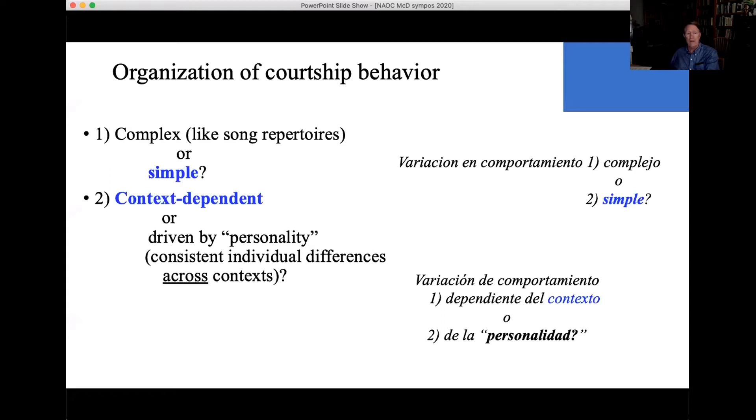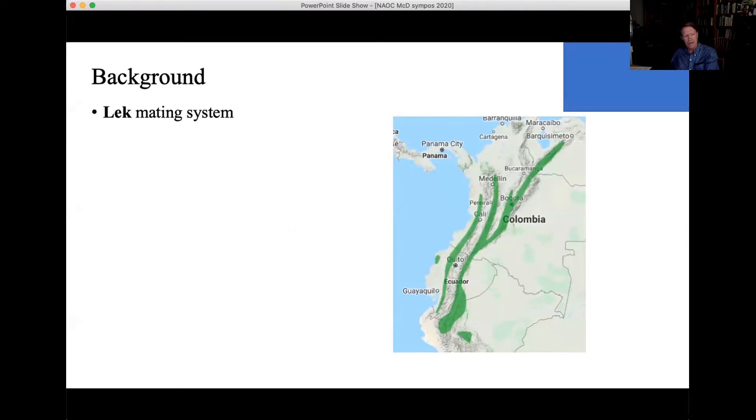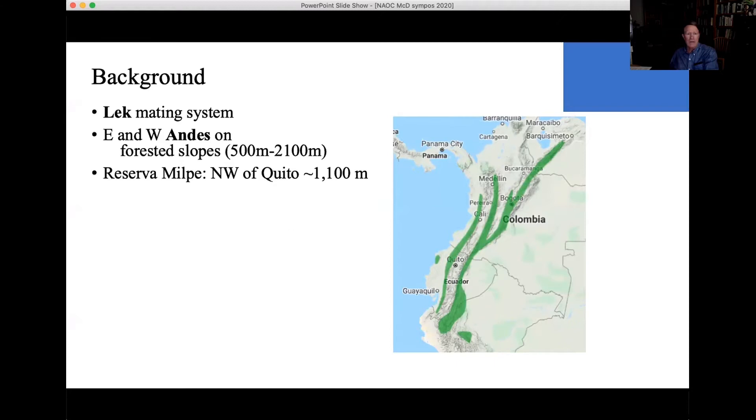So a little background on golden-winged manakins. Like about 85% of the species in this beautiful family, they have a lek mating system. They occur on forested slopes from 500 to about 2100 meters, both east and west of the Andes in the northern Andes. We studied them at the Reserva Milpe, al noroeste de Quito, a más o menos 1,100 metros.